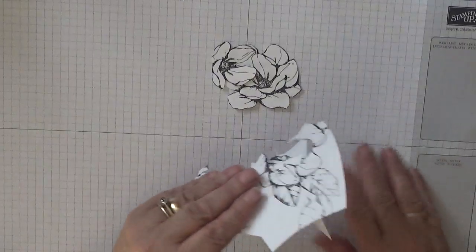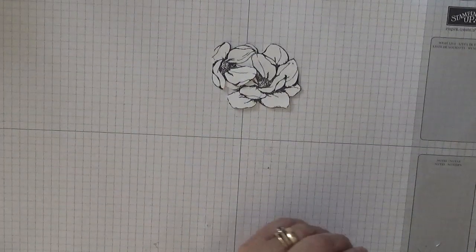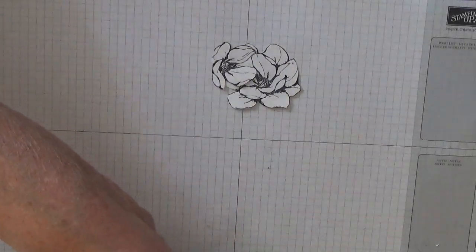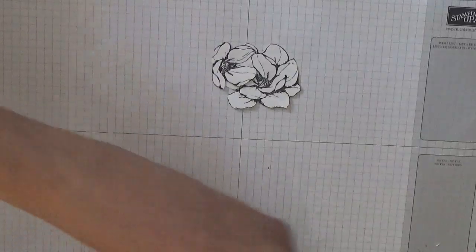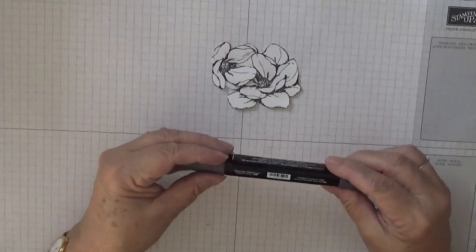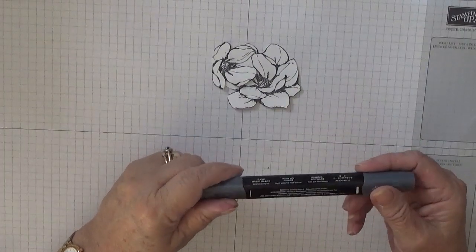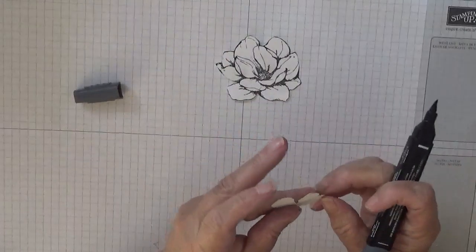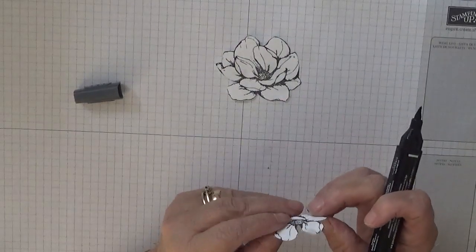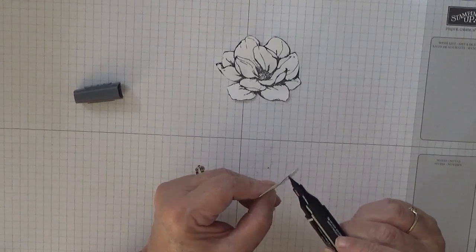Get rid of this. Now, with your dark basic black and the brush end, and with the flower away from here so you've got the back to you, just go round the edge.